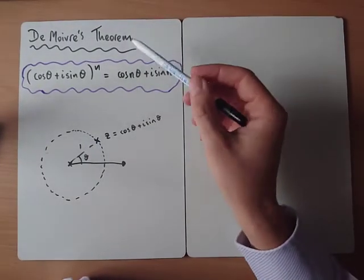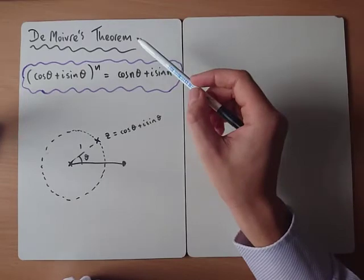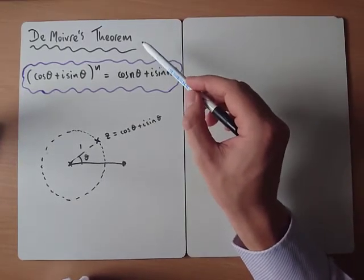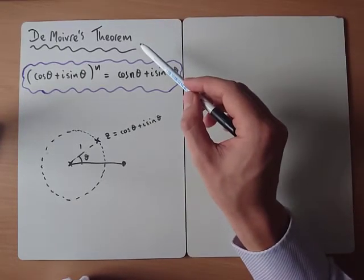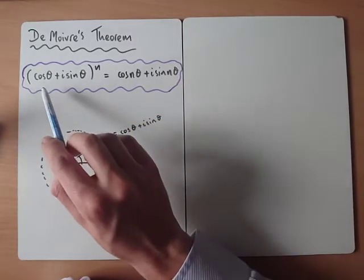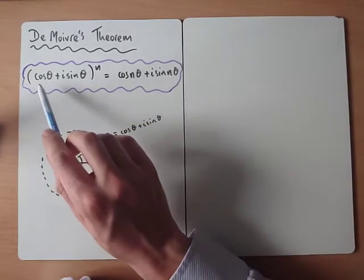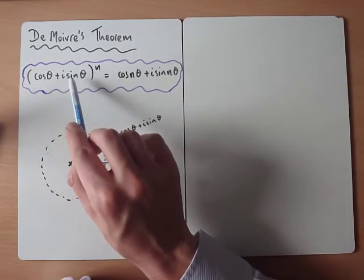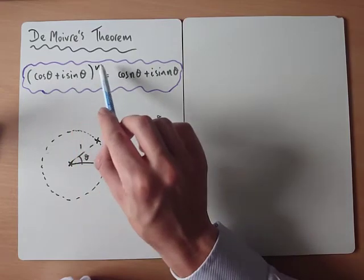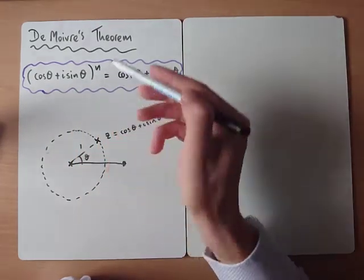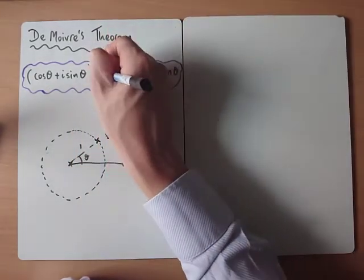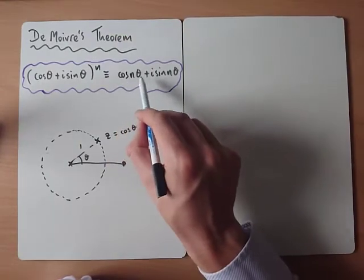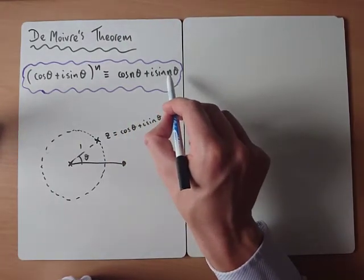In this video we're going to take our first look at a topic called De Moivre's theorem, and it's one of the main topics in second year and further maths. What De Moivre's theorem tells us is that if we have (cos θ + i sin θ) to the power of n, that's equivalent to cos(nθ) + i sin(nθ).